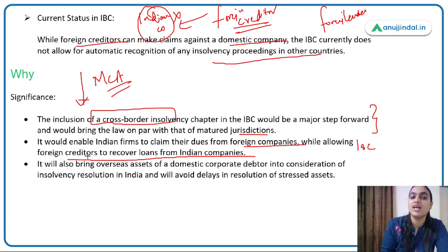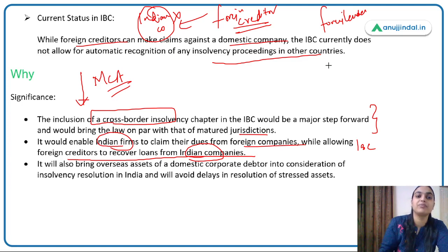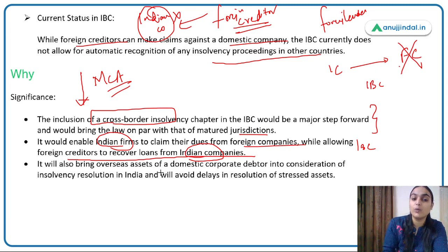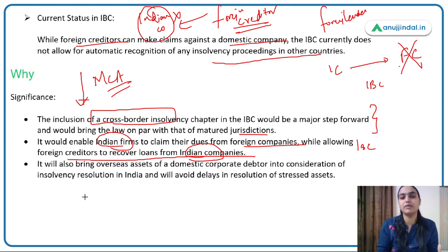If the new framework suggested by MCA is accepted, it will include a cross-border insolvency chapter in IBC — a major step bringing Indian law at par with other jurisdictions. It will enable Indian firms to claim their dues from foreign companies, while also allowing foreign creditors to recover loans from Indian companies. It will also bring overseas assets of domestic corporate debtors into consideration during insolvency resolution in India.